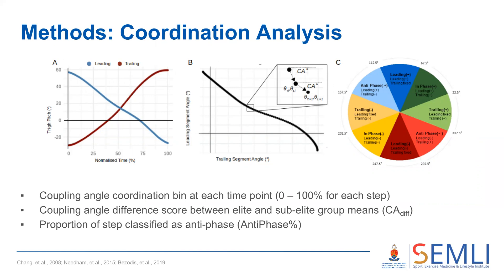The score would be zero if they were in the same coordination bin, one for adjacent bins, two or three for two or three bins difference, or four if they were in opposite bins. The sum of the coupling angle difference score from each time point was expressed as a percentage of 404, the maximum possible score for each step. The proportion of the step where the athlete was in an antiphase pattern was also quantified as a percentage.